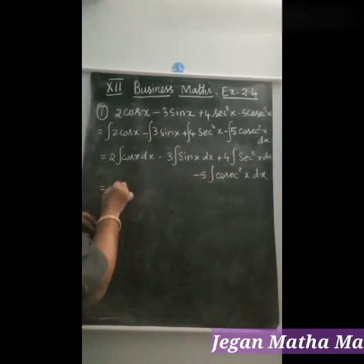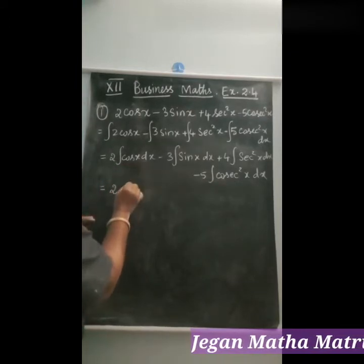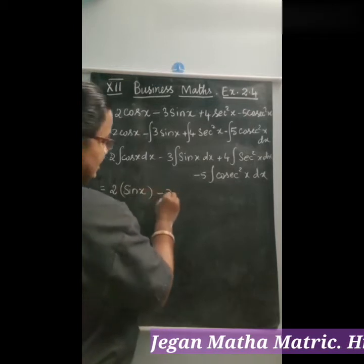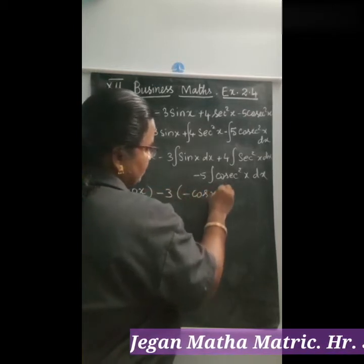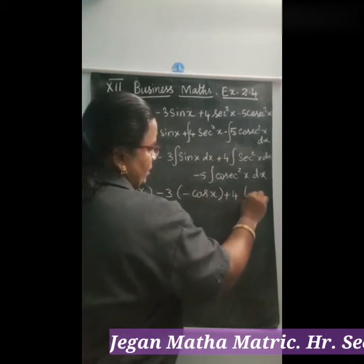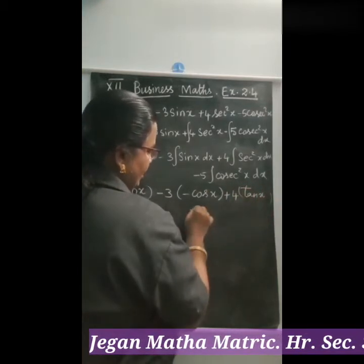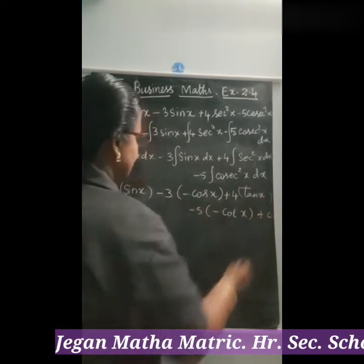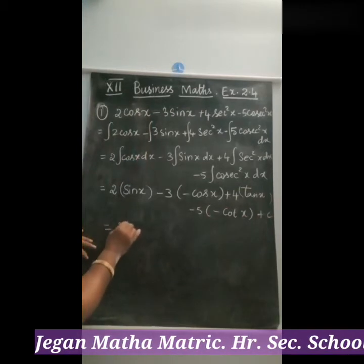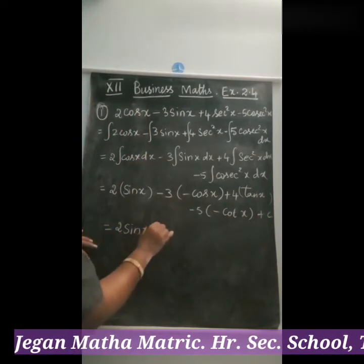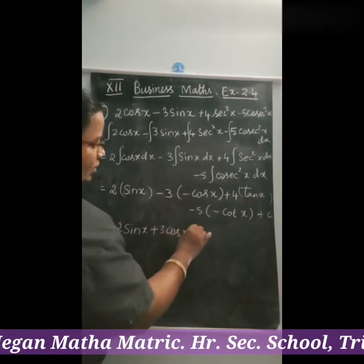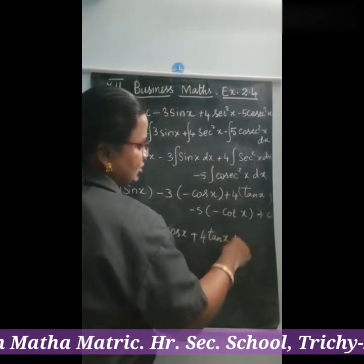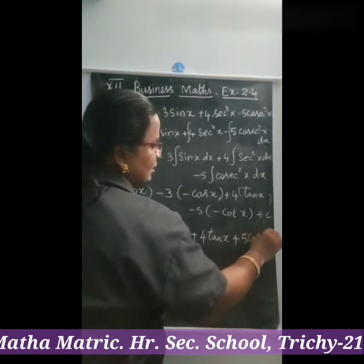Substituting: 2 into sin x, minus 3 into minus cos x, plus 4 into tan x, minus 5 into minus cot x, plus c. This simplifies to 2 sin x plus 3 cos x plus 4 tan x plus 5 cot x plus c.